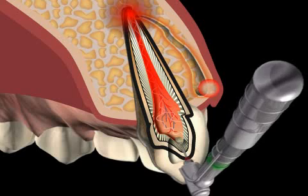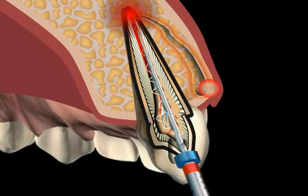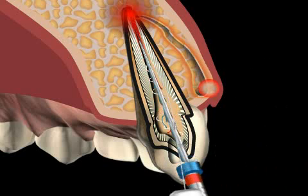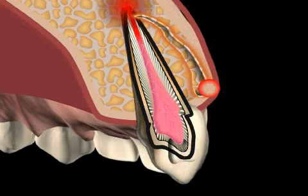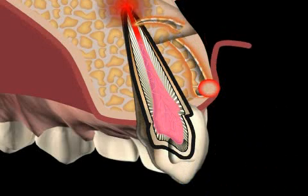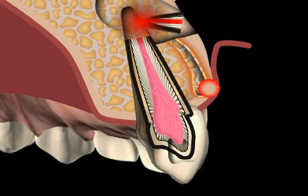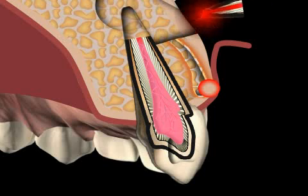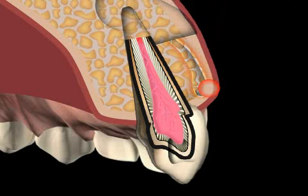Possible treatment options include either a root treatment or, if the focus has already gotten too large, root treatment with subsequent root tip resection. The fistula corridor is usually also removed during the operation. If not, it normally heals by itself after the cause is removed.